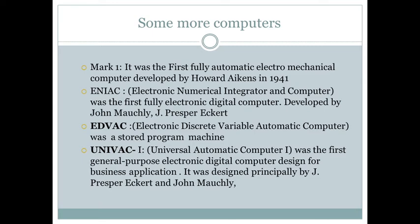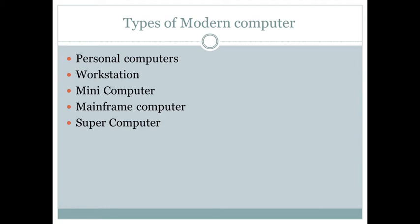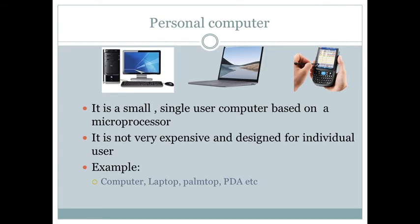Modern computers can be divided into five types. The first is the personal computer. It is small in size, a single person can use it, and it is based on a microprocessor. It is quite inexpensive and designed for only one individual user. The computer you have at home is a personal computer — a laptop, a PDA, or what we also call a palmtop.